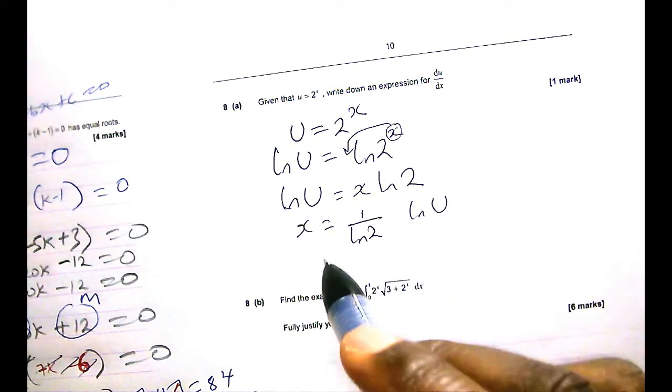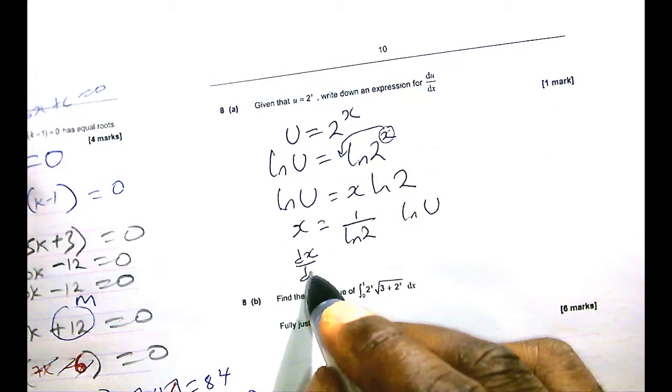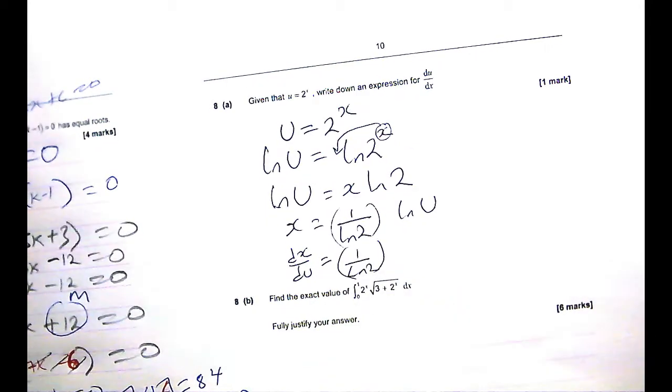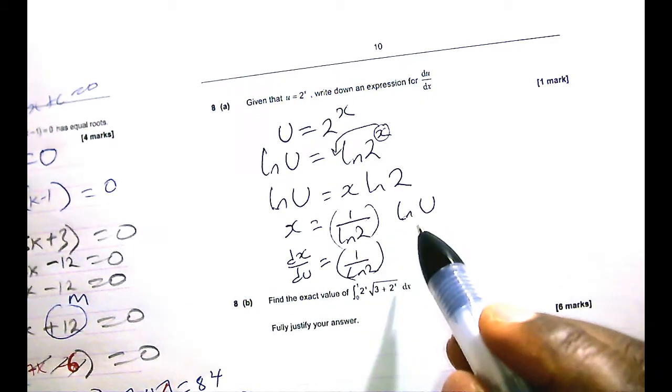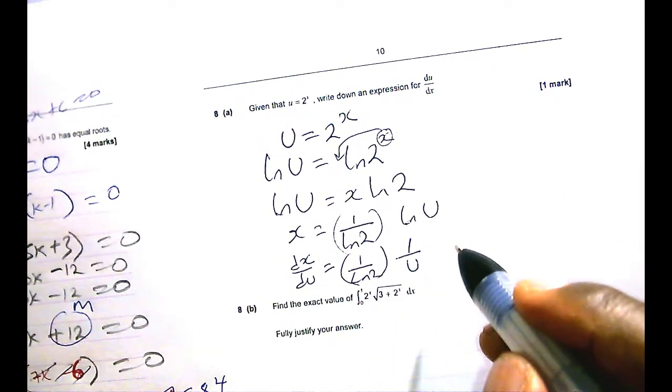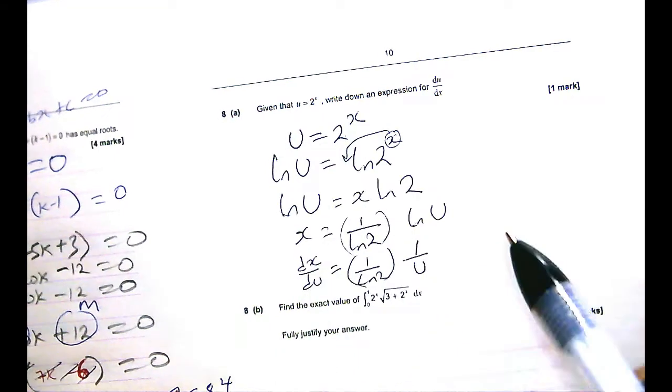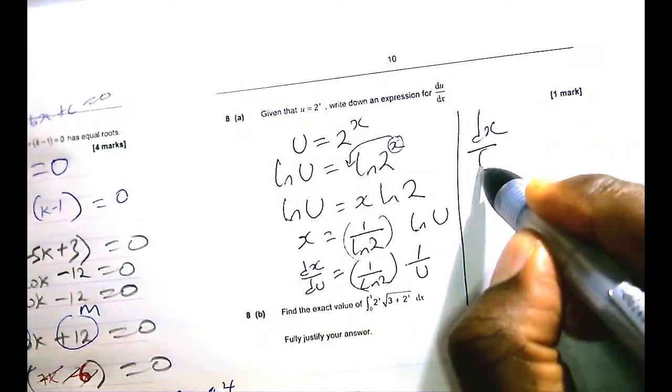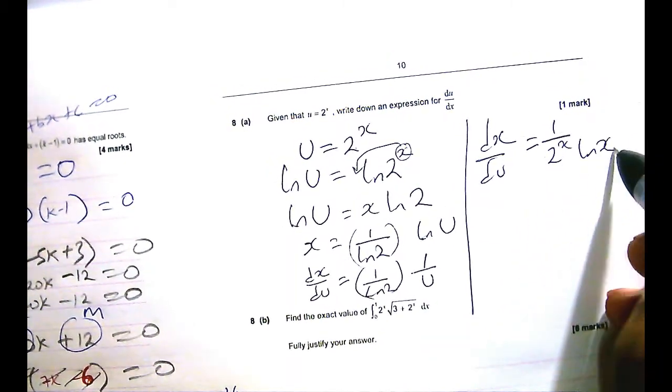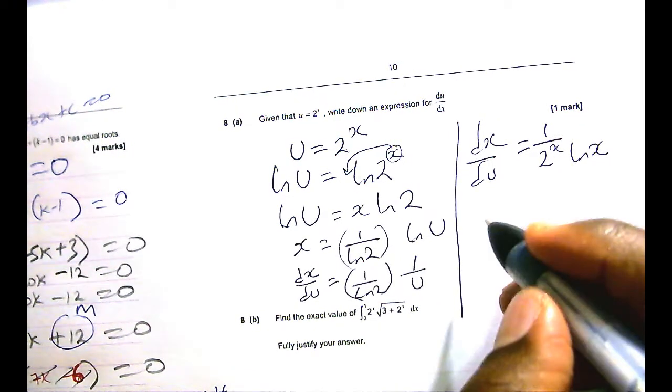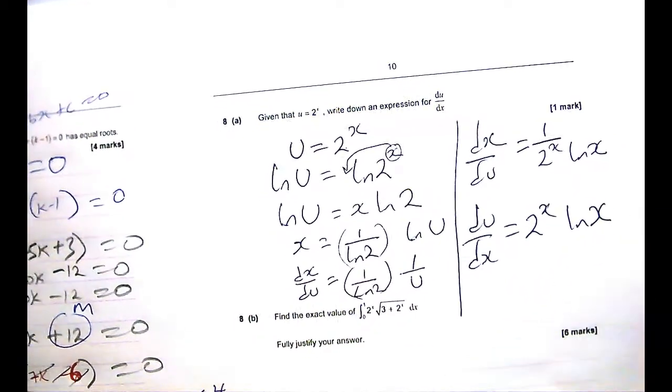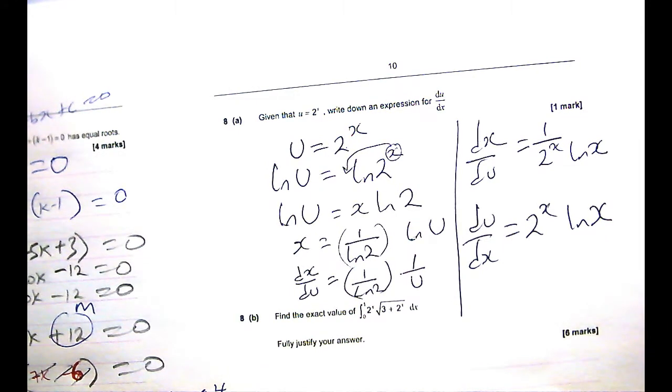So if I am to differentiate now dx du, my coefficient stays the same. It doesn't get differentiated. It's still there. But what's the derivative of lin u? Of lin. It's just 1 over. So it's going to be 1 over u. And we know that u is 2 to the x. So therefore, dx du is 1 over u lin x, which is 1 over 2 to the x lin x. But we are looking for du over dx. So du dx is the reciprocal of the other side, which is also that.